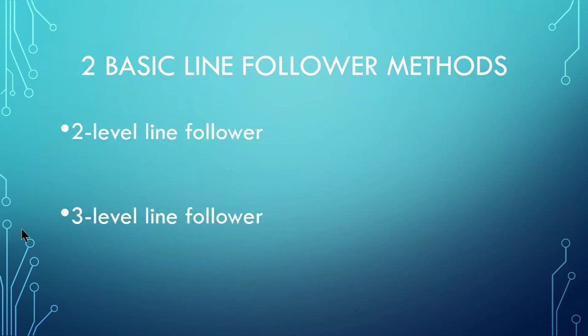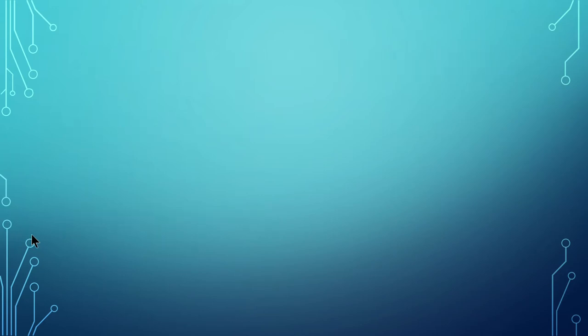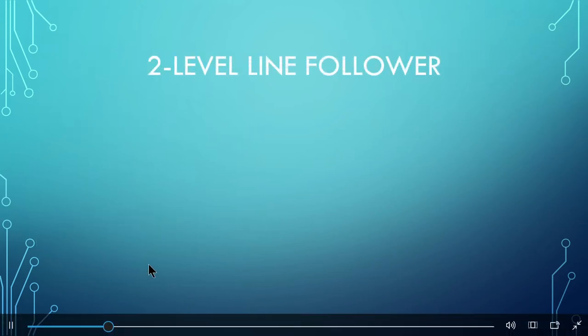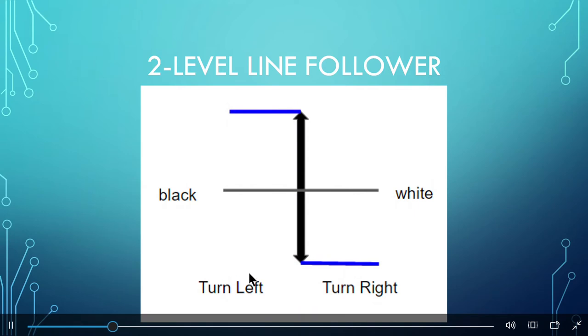The two-level line follower is very inefficient since whatever the light sensor reading, the robot always turns the same. In a two-level line follower, the robot never moves straight, even if it is right on the edge of the line, which is very inconvenient.